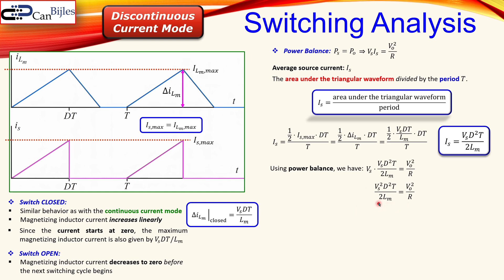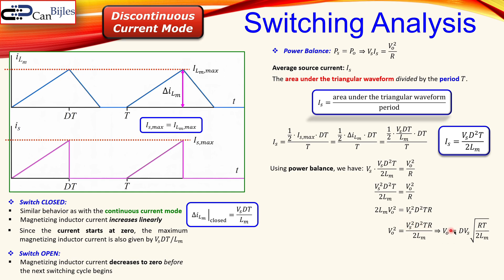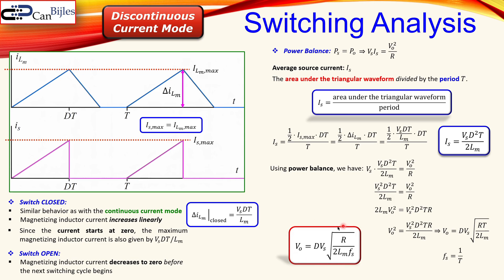Using the power balance and substituting the average source current expression, we get Vs squared on one side. Cross-multiplying gives: 2·Lm·Vo² = Vs²·D²·T·R. Solving for Vo, we divide by 2·Lm and take the square root of both sides. Since switching frequency Fs = 1/T, we can express the final result as: Vo = D·Vs · sqrt(R / (2·Lm·Fs)). This expression is different from the continuous current mode formula.